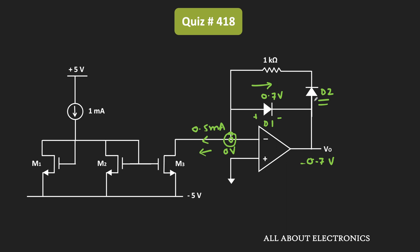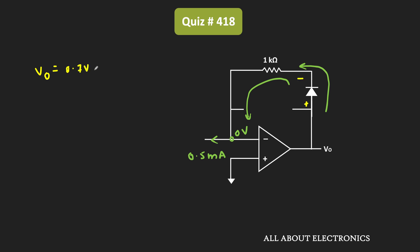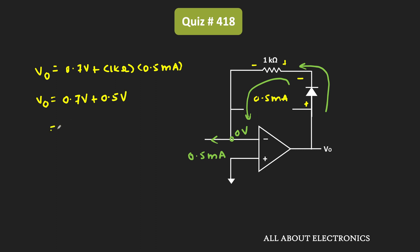Therefore, only diode D2 will conduct. D1 remains off, and the 0.5 mA current flows through D2 and also through this path. This node is at virtual ground. Applying KVL in this loop, the output voltage Vout equals the drop across diode D2 (0.7V) plus the voltage drop across the 1 kΩ resistor, which is 1 kΩ × 0.5 mA = 0.5V. Therefore, Vout = 0.7V + 0.5V = 1.2V.